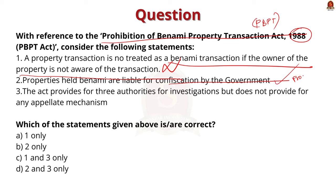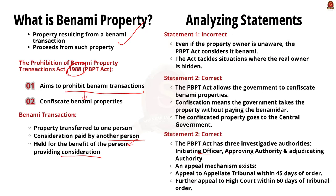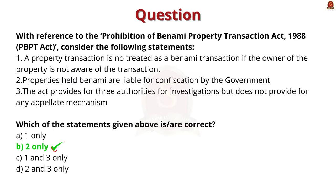The third statement says the Act provides for three authorities for investigation but does not provide for any appellate mechanism. This is partially correct. The Act does provide three authorities: the Initiating Officer, the Approving Authority, and the Adjudicating Authority. However, the Act also provides an appellate mechanism — a person aggrieved by an order of the Adjudicating Authority can appeal to the Appellate Tribunal within 45 days, and further appeal to the High Court within 60 days. So the third statement is incorrect. The correct answer is option B — statement 2 only.